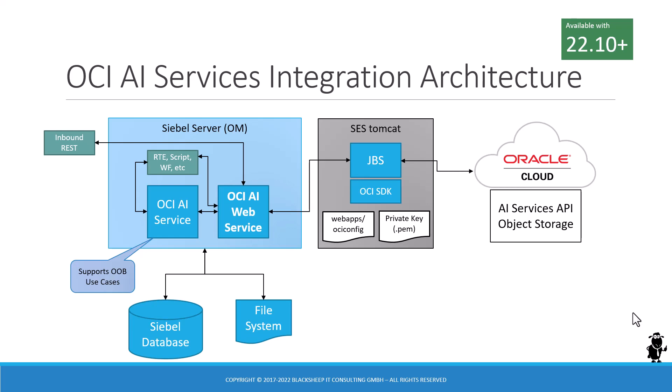The OCI AI web service is a Java business service. At runtime, the code is executed as Java class code on the internal application container, also known as SES Tomcat. The OCI SDK libraries are present on that Tomcat along with an OCI config file with the user credentials and details of the OCI tenancy account and the private key file of that account. This allows secure connectivity to Oracle Cloud where the AI services API is invoked, and object storage is used for speech recognition to upload the audio file and download the resulting text file.